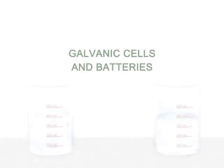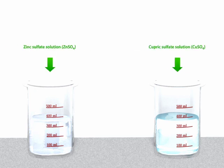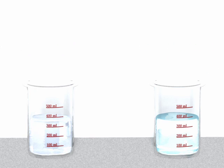Batteries are based on the principle of galvanic cells. A galvanic cell consists of two electrolytic solutions which are separated from each other. In this example, the first solution is zinc sulfate, the second one is cupric sulfate.